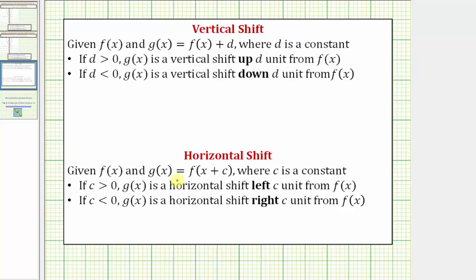Now let's talk about a horizontal shift. Given f of x and g of x equals f of the quantity x plus c, notice how here we have plus a constant inside the parenthesis. If c is greater than zero, g of x is a horizontal shift left c units from f of x. So if we have plus a positive value here, the graph is shifted left — maybe the opposite direction of what we might think.